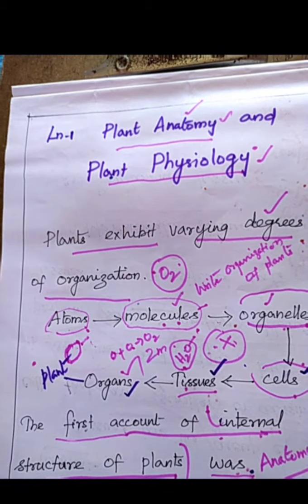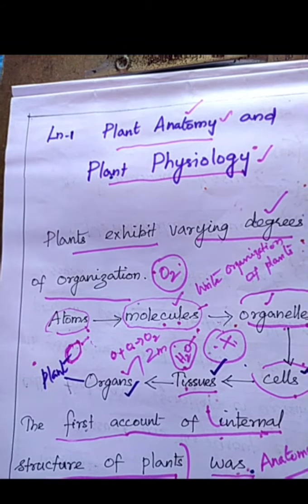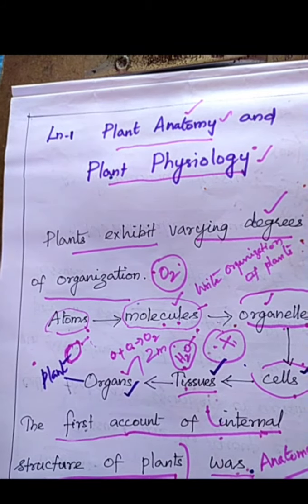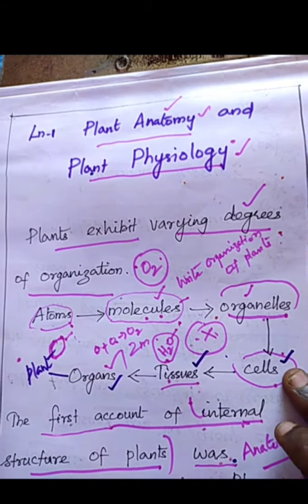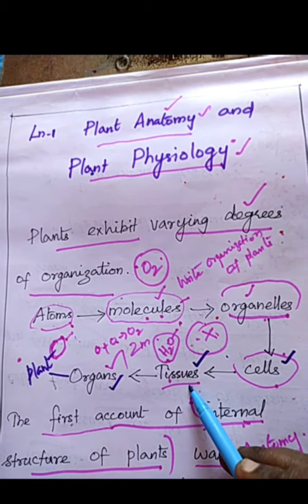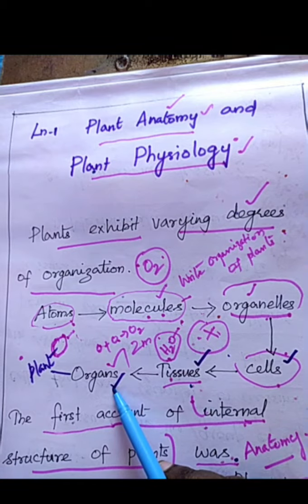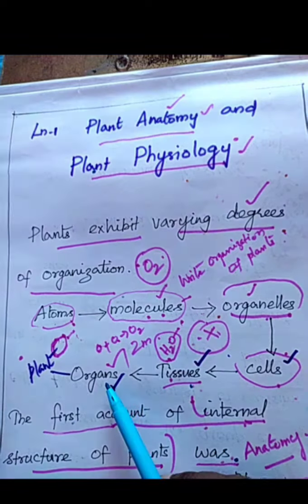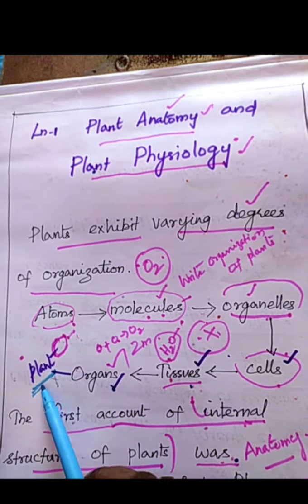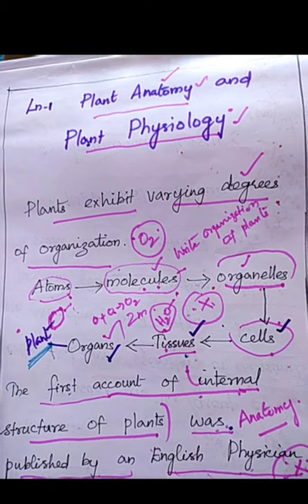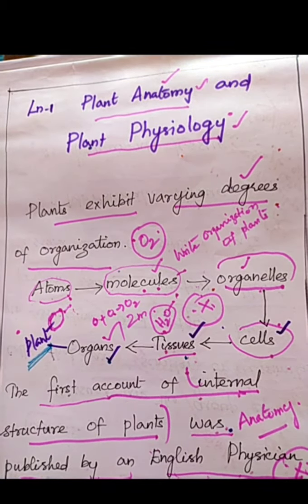A plant body is made up of atoms. Atoms are organized to form molecules. Molecules are organized to form organelles. Organelles are organized to form cells. Cells are organized to form tissues. Tissues are organized to form organs like stem, root, and leaf. Those organs make up the plant body.